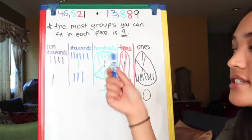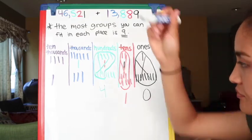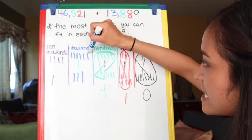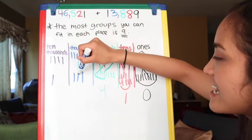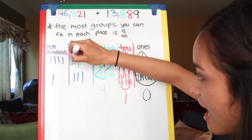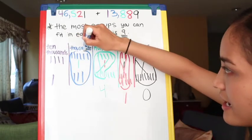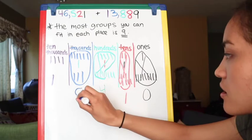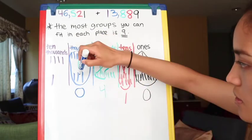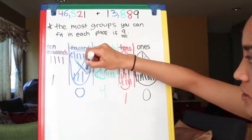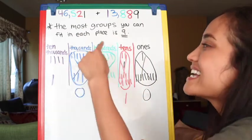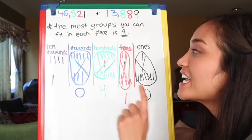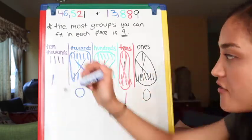Time to count our thousands — one, two, three, four, five, six, seven, eight, nine, ten. Awesome! Every single one of these I get to circle with nothing left over, so I'm going to put a zero. Cross this out and shimmy it on over, because ten groups of thousands equals one group of ten-thousands.